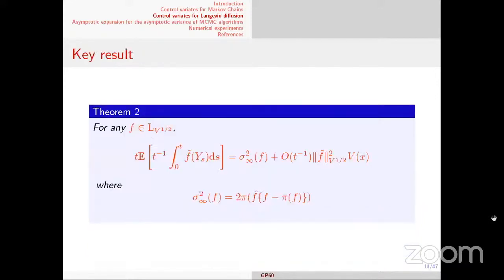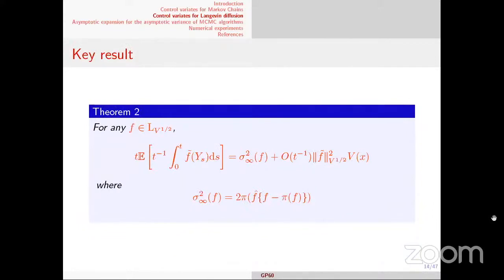The expression for the asymptotic variance in the continuous-time CLT is almost the same as in the discrete case — not exactly, because here it's two times pi(f_hat_continuous · f_tilde) where f_hat_continuous is the continuous-time Poisson solution. There is one term different from the discrete case. The same idea applies: it's possible to construct control variates. There is a universal way: for any function g in the domain of the generator L, pi(Lg) = 0, so applying the generator gives a family of zero-mean functions called Stein control variates.